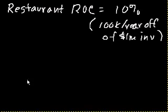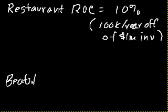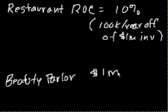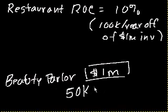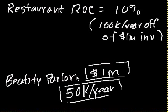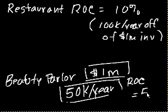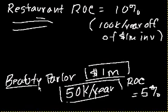And let's say the other option with my money is a beauty parlor. A beauty parlor that also costs $1 million. And this beauty parlor gets me $50,000 a year. I think it's very obvious to you already which investment you'd rather invest in, because the return on capital on this beauty parlor is only $50,000 divided by $1 million, or 5%. You'd rather do the restaurant than the beauty parlor. In general, after adjusting for risk, you always want to go with the project that has the higher return on capital.